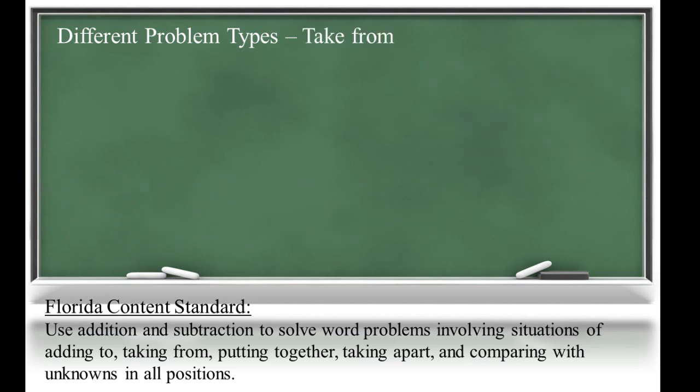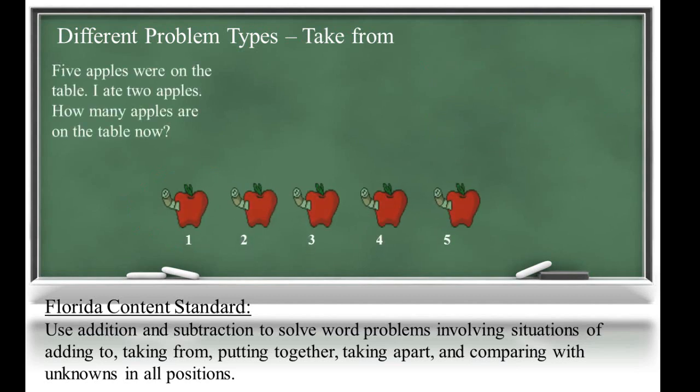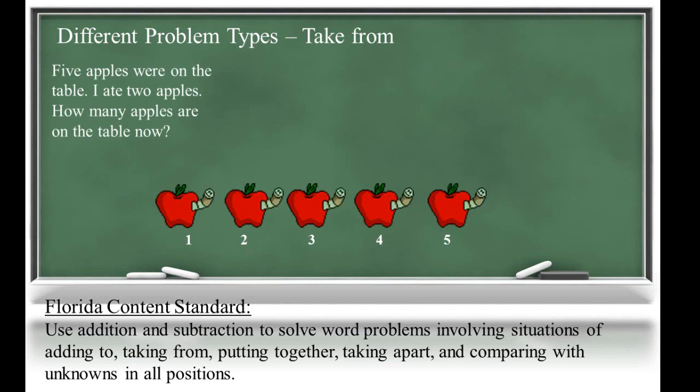Now let's examine some take-from problems. The first problem, five apples were on the table. I ate two apples. How many apples are on the table now? Since we know how many apples we started with and we know the change, we can find the unknown result by simply subtracting five minus two to get three.